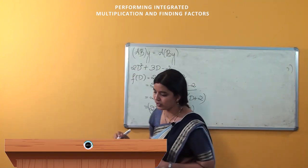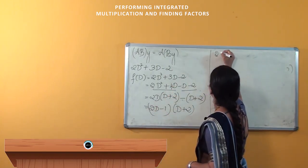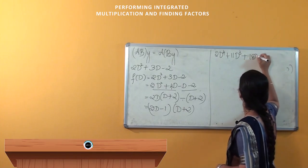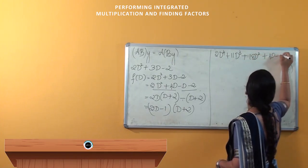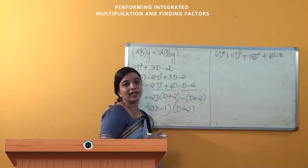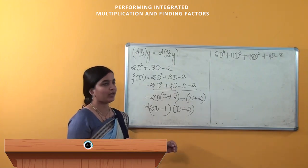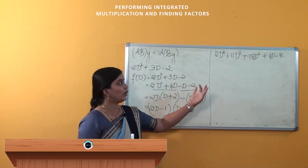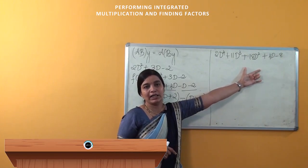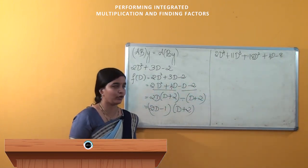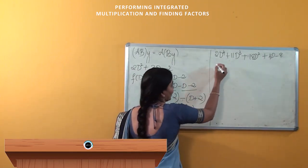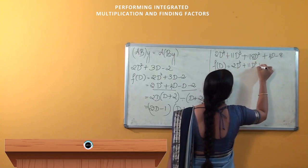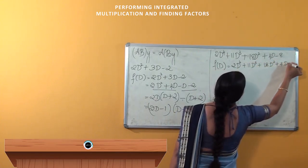Suppose a 4th degree equation is given: 2D⁴ + 11D³ + 18D² + 4D − 8. We can use the synthetic division method here. First, we find one root by the trial and error method, substituting 1, −1, 2, −2, 3, −3, or 0 to find whether we get a root. Clearly, substituting 0 gives −8, so 0 is not a root. We define f(D) = 2D⁴ + 11D³ + 18D² + 4D − 8.